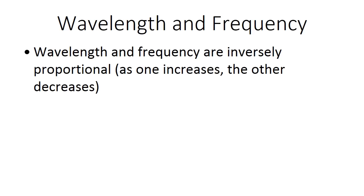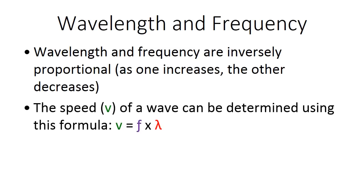Wavelength and frequency are inversely proportional. And that means as one increases, the other decreases. So if your waves are longer, obviously your frequency is going to go down. So as the waves get bigger, the frequency gets smaller. The waves happen less often because the waves are longer. That makes sense. The speed of a wave, V, can be determined using this formula. V equals F times lambda. Or speed equals frequency times wavelength.